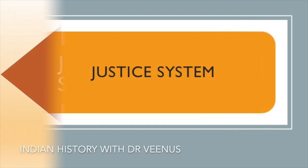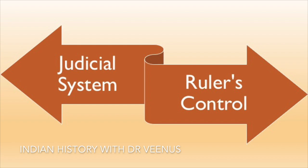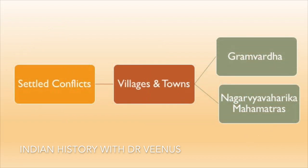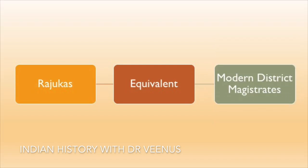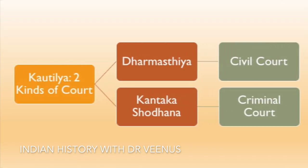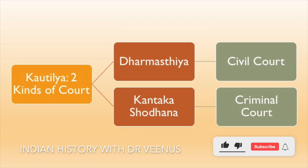The judicial system was under the rulers' control. The Gramvardha and Nagar Vyavharik Mahamatras respectively settled conflicts in villages and towns. Rajukas, who were roughly equal to our current district magistrates, were found across the state. Kautilya mentions two other sorts of courts: Dharmastiya, that is civil court, and Kantakshodhan, that is criminal court.